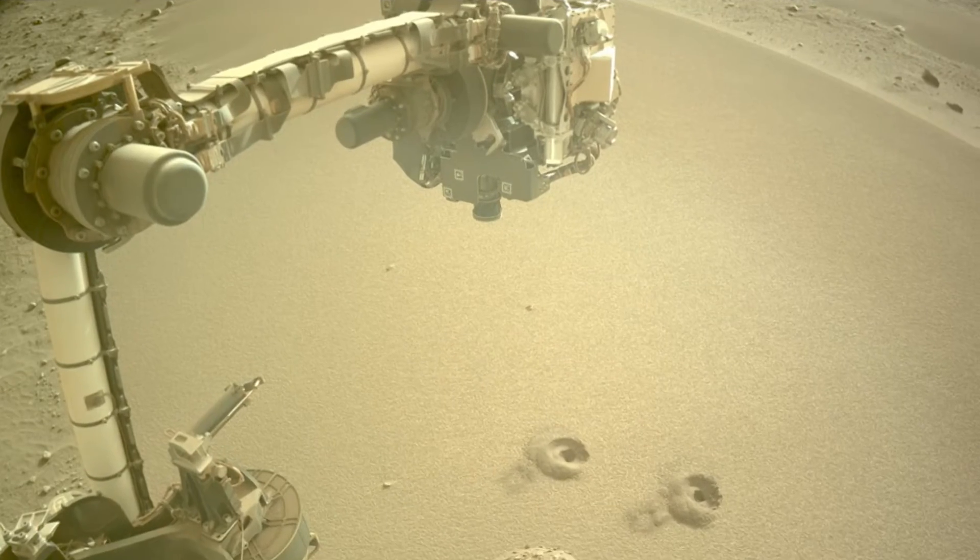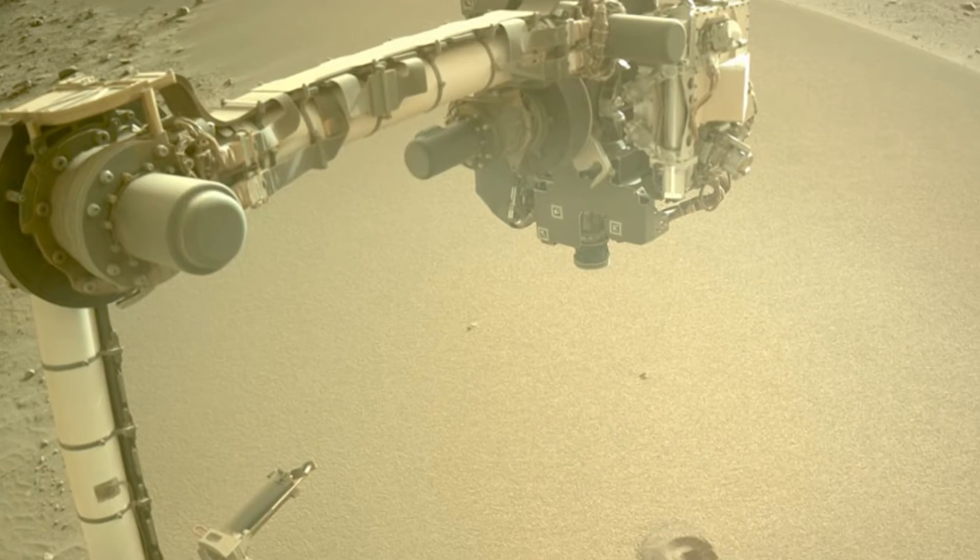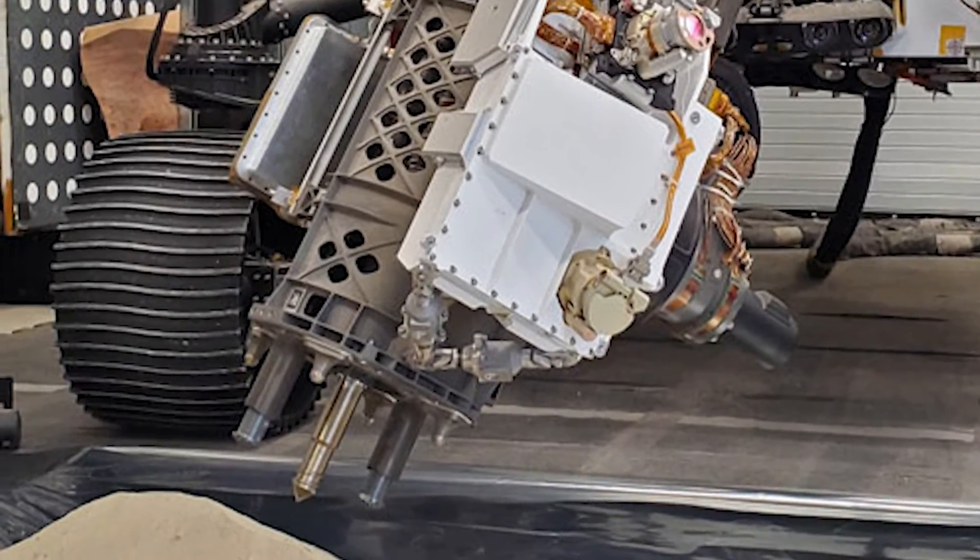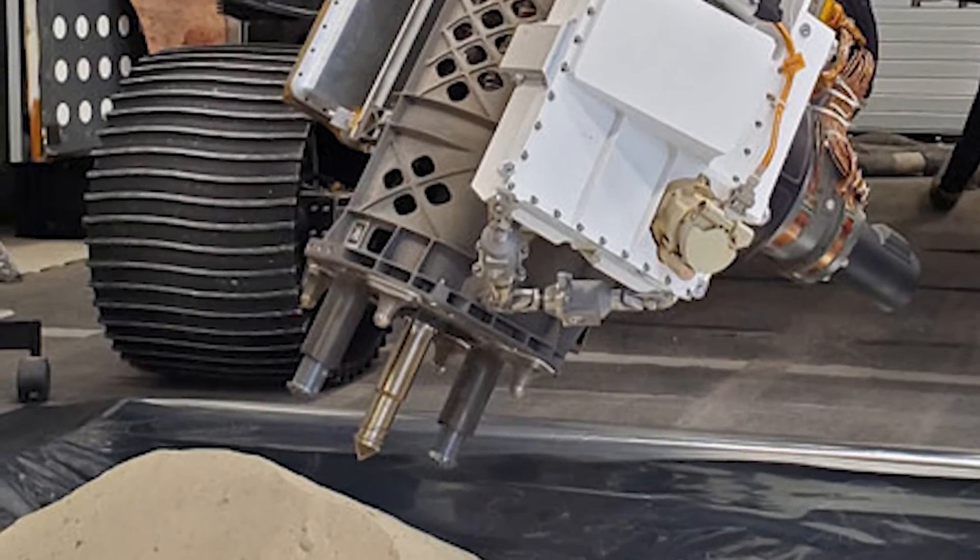The drill used to collect regolith samples is called the Mojave Mars Simulant. It is made of volcanic rock that has been crushed into different sizes, from fine dust to large pebbles.